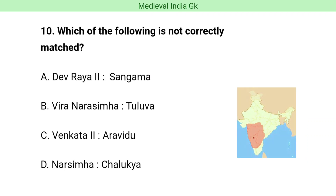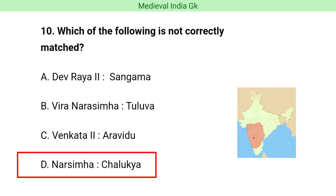Question number ten. Which of the following is not correctly matched? The correct answer is option D, i.e. Narasimha Chalukya.